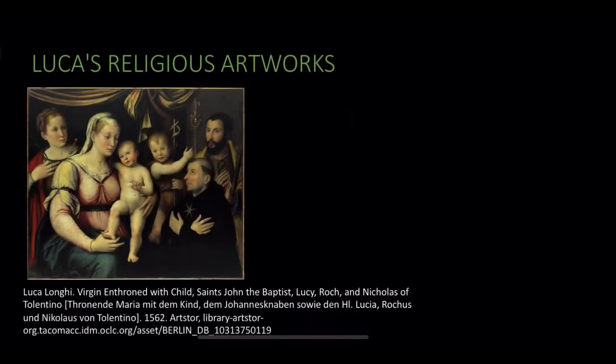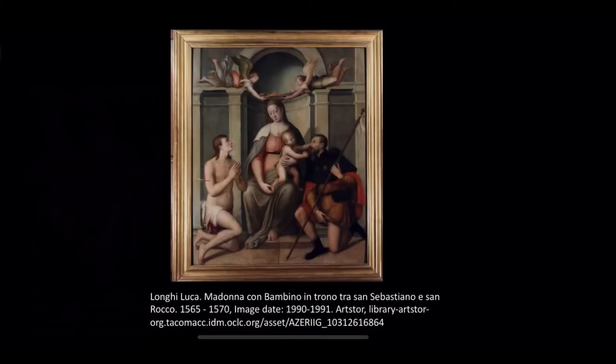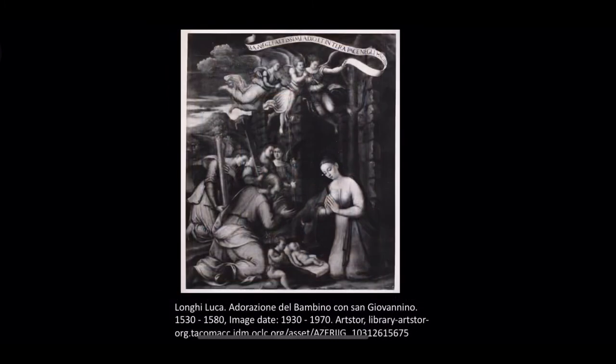Luca Longhi has many religious artworks. The painting above is one example, called Virgin and Throne with Child, Saints John the Baptist, Lucy, Roque, and Nicholas of Tolentino. Here we have another religious painting by Luca Longhi. This art piece of Luca's shows the characteristics of late Renaissance work — the characters have dynamic, twisting poses, and this piece is also religious.